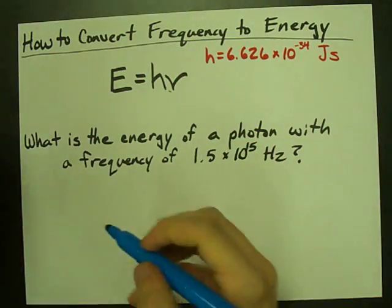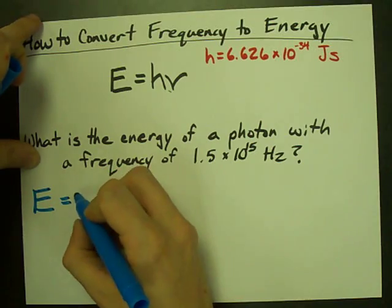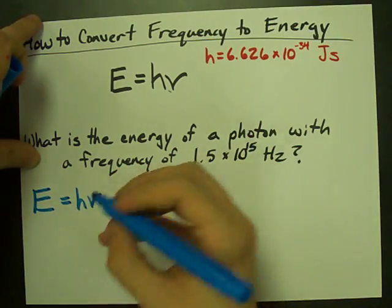So what is the energy of this photon? E equals H times nu. It's a Greek letter.